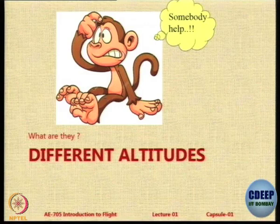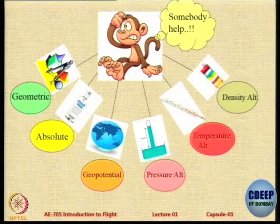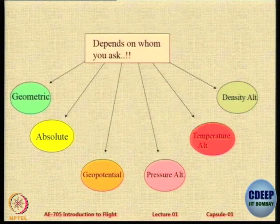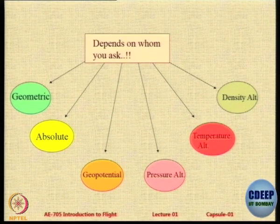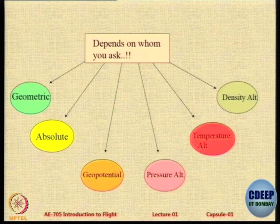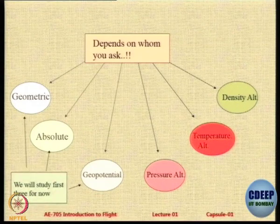Now we come to altitudes. Interestingly, when I say altitude you may think there is only one, but in aerospace there are actually six altitudes which are defined. Today we will look at only three: depending on whom you ask — the air traffic controller, the pilot, the person on the ground, the meteorologist, the aircraft designer, the performance engineer — there could be different answers for altitude. The first three we will study now are geometric, absolute, and geopotential.